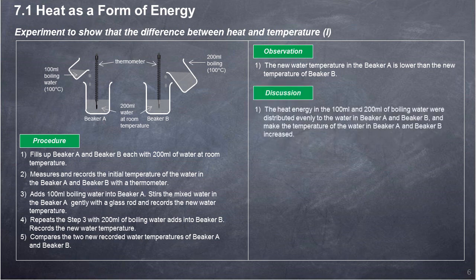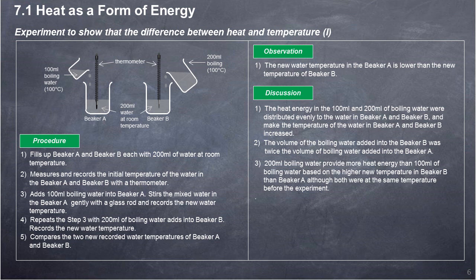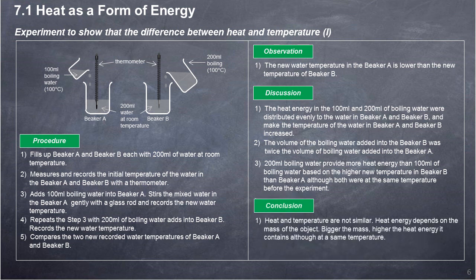Discussion: The heat energy in the 100 ml and 200 ml of boiling water were distributed evenly to the water in Beaker A and Beaker B, and made the temperature of the water in both beakers increase. The volume of boiling water added into Beaker B was twice that added into Beaker A. The 200 ml of boiling water provided more heat energy than 100 ml of boiling water, based on the higher new temperature in Beaker B, although both were at the same temperature before the experiment. Conclusion: Heat and temperature are not similar. Heat energy depends on the mass of the object. The bigger the mass, the higher the heat energy it contains, although at the same temperature.